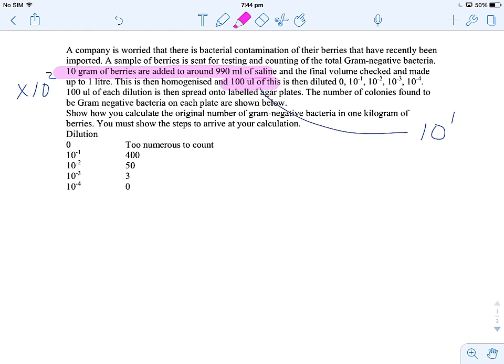Then we have to look at which of the dilutions give us a countable number of colonies on an agar plate. So here we have 10 to the minus 2 gives us 50. So let's put that here. We're going to use the 10 to the 2 to bring back to what was originally in solution.